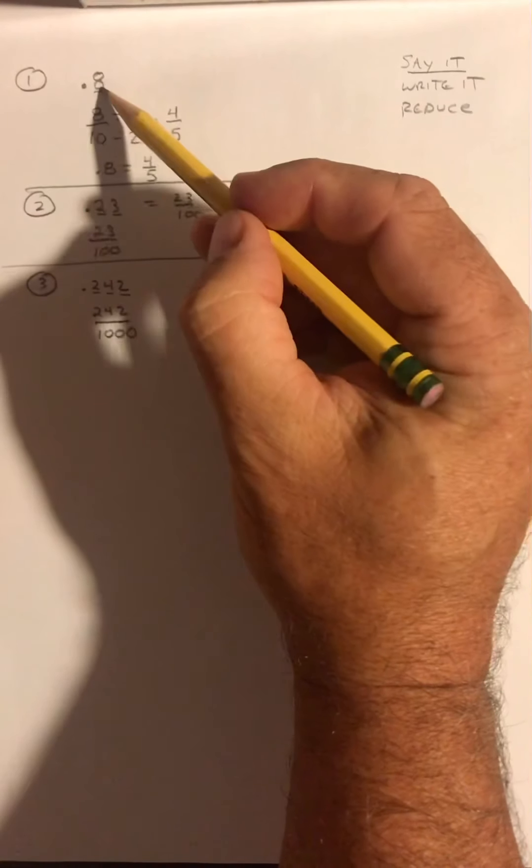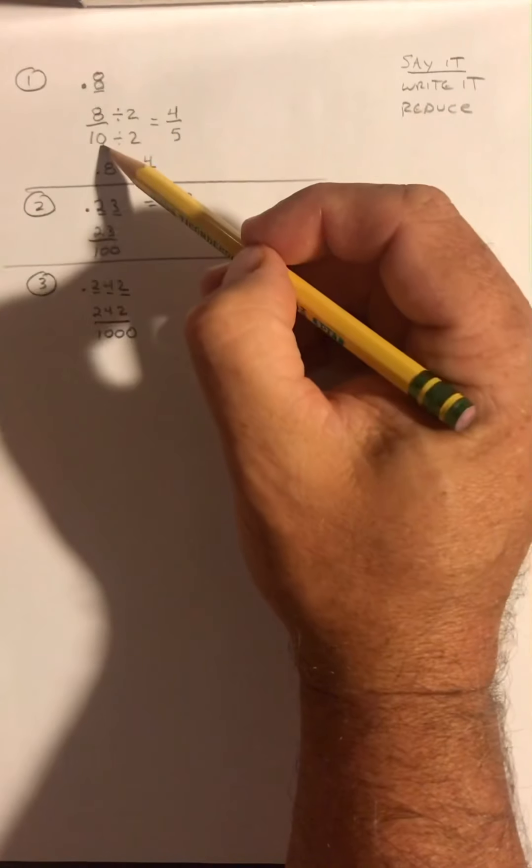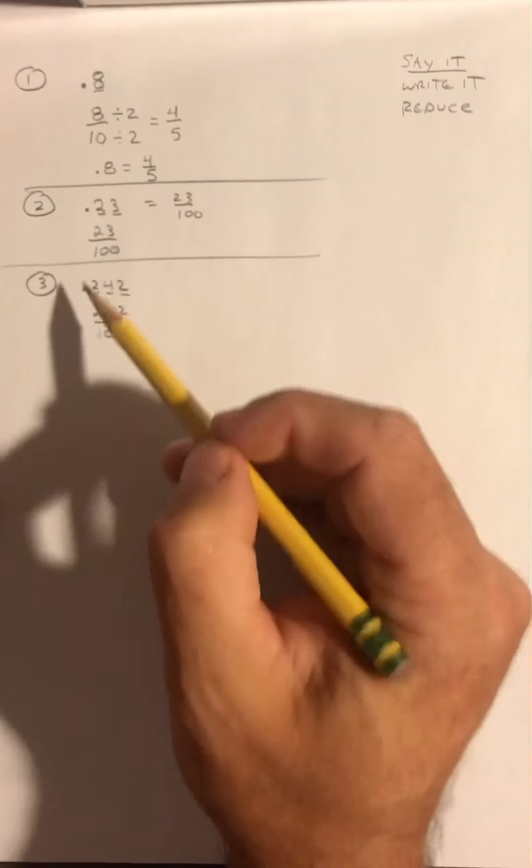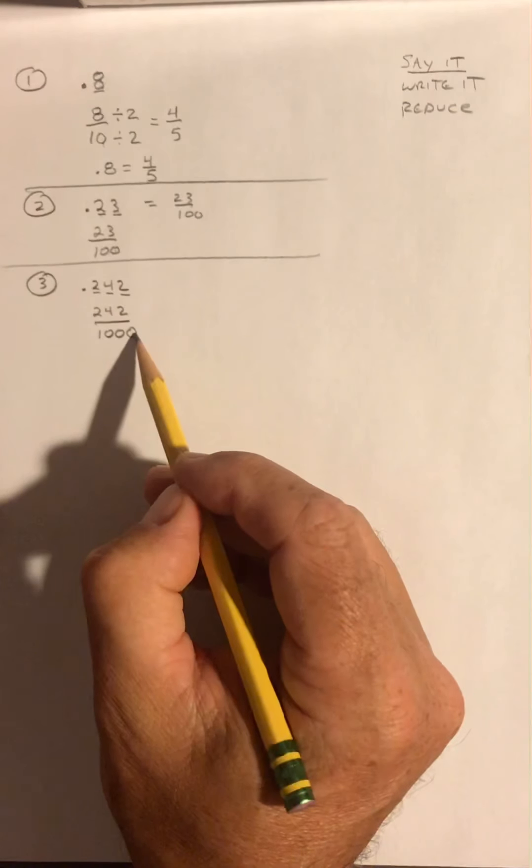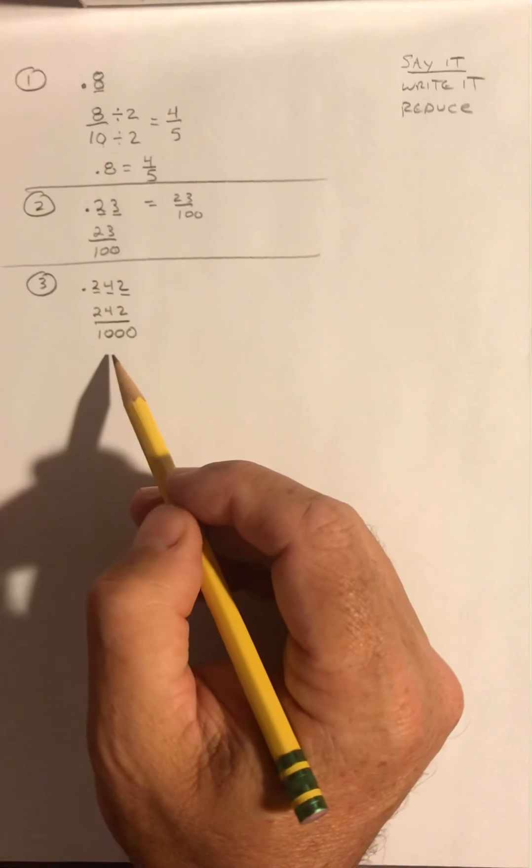So this one had one spot past the decimal, one zero. Two spots past the decimal, two zeros. Three spots past the decimal, three zeros. Let's try and reduce this.